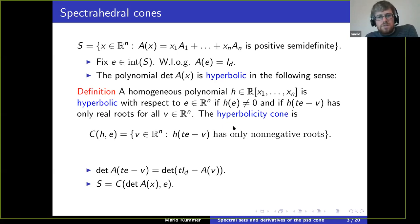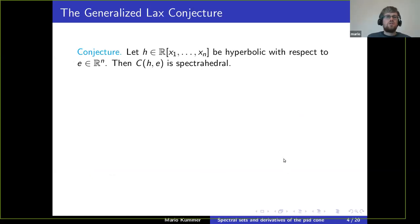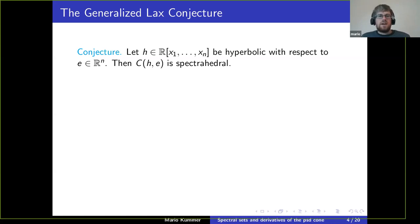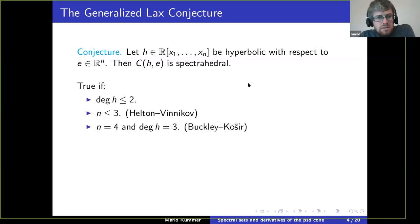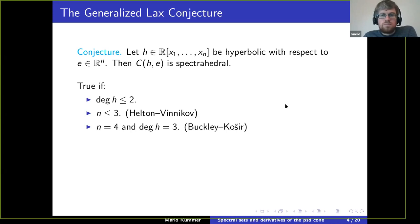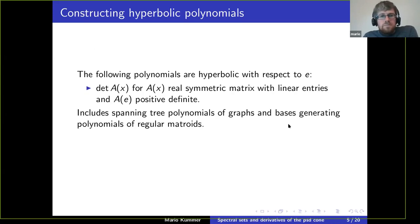So this is a necessary criterion for a set to be a spectrahedral cone: it can be found as the hyperbolicity cone of some hyperbolic polynomial. There's a major open question in this context asking if this is also a sufficient criterion — can any hyperbolicity cone be described using linear matrix inequalities? It's true when you have only a few variables or small degree, but in general it's open.